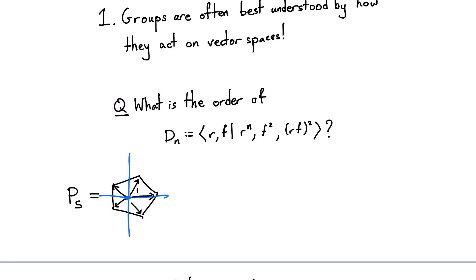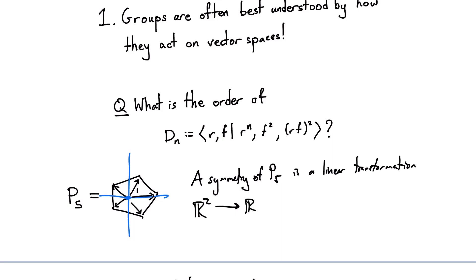We have this nice pentagon embedded in R^2. By a symmetry of P_5, what I really mean is a linear transformation T from R^2 to R^2 such that when I apply this linear transformation to the pentagon, I get the pentagon back. Every point in the pentagon will have to be in the image of this transformation. We can see that the points in the pentagon span R^2 — for example, just two adjacent vertices would be a basis for R^2. So the condition that I can produce every point in the pentagon tells me the linear transformation will be surjective. Because I'm going from R^2 to R^2, that tells me the linear transformation is invertible. So each of these symmetries is going to be a linear isomorphism from R^2 to R^2, represented by a 2×2 invertible matrix with real coefficients.